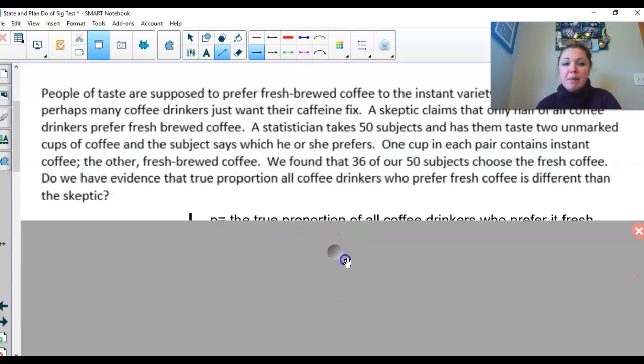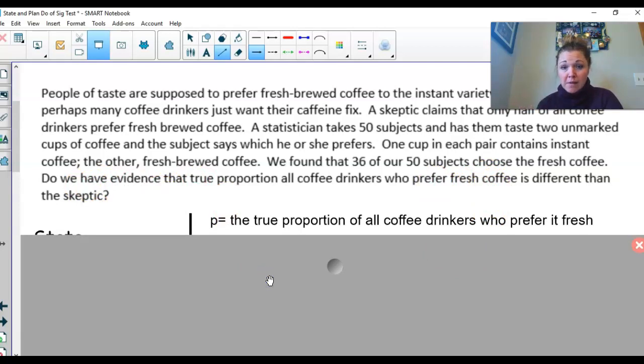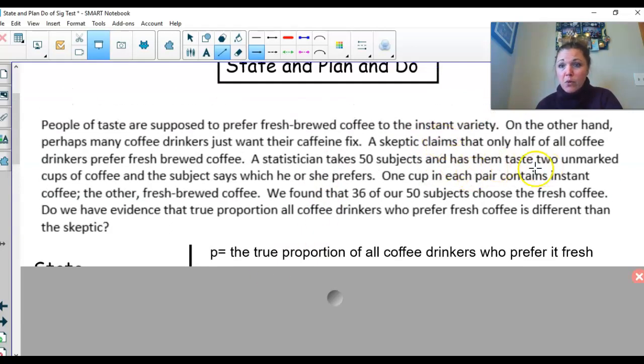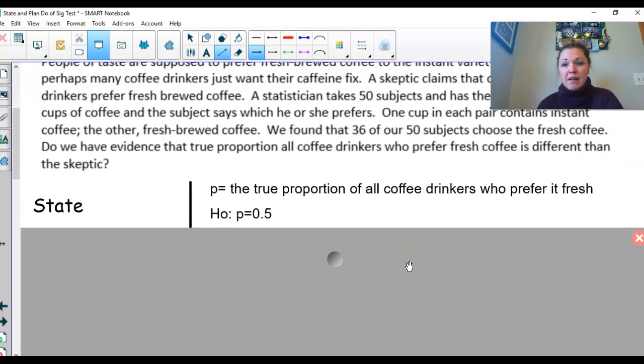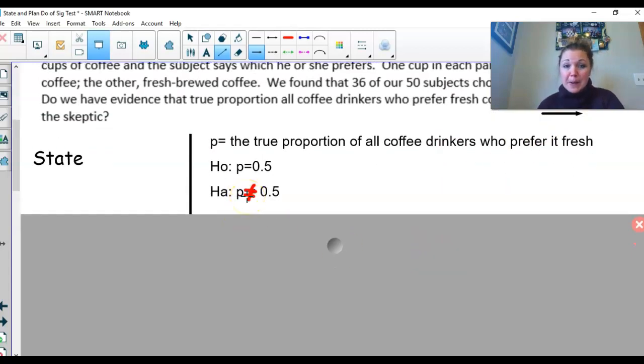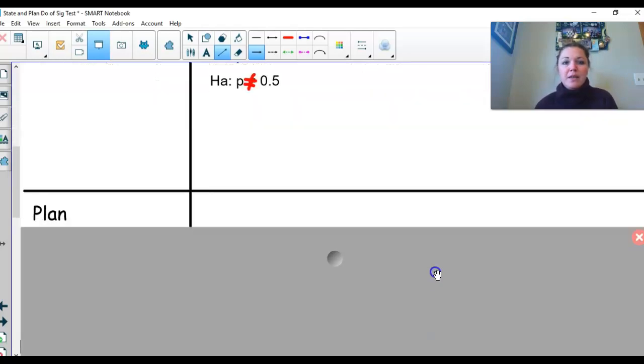State, p, what's the story about? It's the true proportion of coffee drinkers who prefer fresh coffee. Right there in the question. Your H0, is there a claim? And there is a claim up here, that only half of all coffee drinkers prefer fresh coffee. So that's where you would say p is equal to 0.5. Our Ha then is what are we trying to find evidence for? And it doesn't say less than, it doesn't say greater than, it says different. So we put a not equal to right there. Step one, state done. Plan is the conditions. And for today, because it's longer notes today, I'm going to skip that part for you and go right to the do.